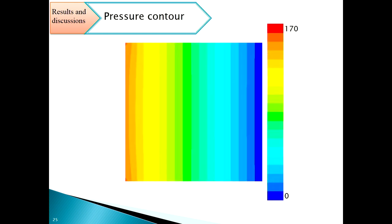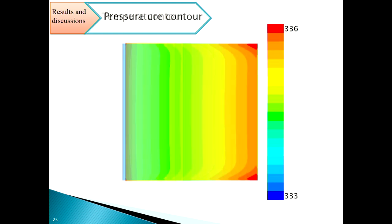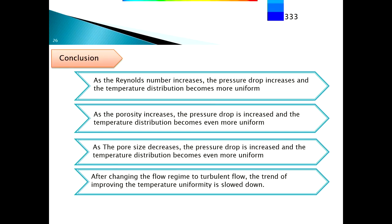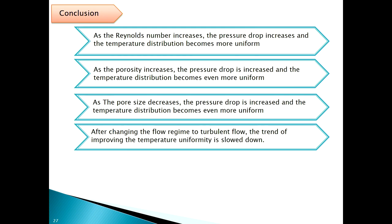Here is the pressure contour. We can easily see the uniformity of the pressure contour through the cooling channels of the fuel cell. The temperature contours also become very uniform through the fuel cell cooling system.